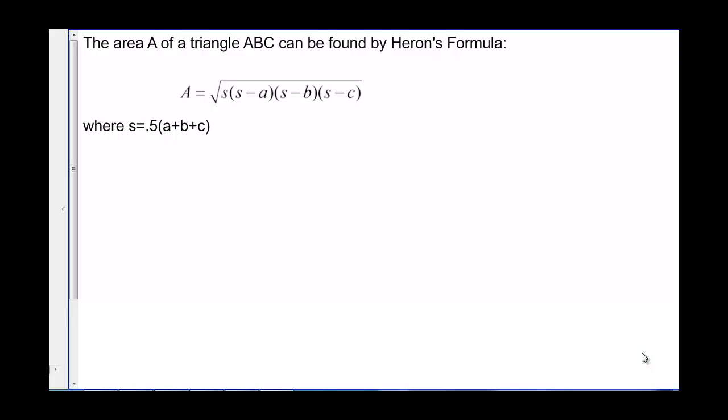We can find the area A of a triangle ABC by using Heron's formula. A equals the square root of S times S minus A times S minus B times S minus C, where S equals one-half A plus B plus C.